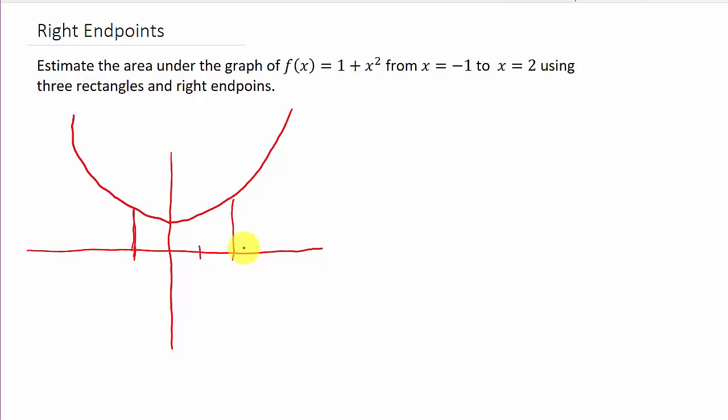Okay, so first thing we'll do is we'll get the width of the rectangle, which that's delta x. So delta x is this larger value here minus this value and then divided by however many rectangles you want. So that's going to be two minus negative one over three, which that's going to be three over three, which equals one. So the width of each rectangle is one.